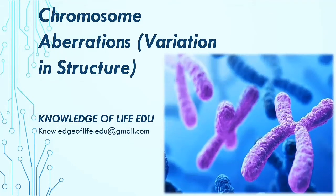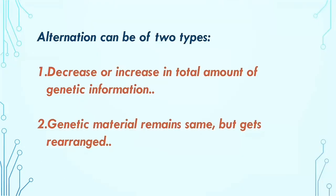Hello everyone, welcome to another video of Knowledge of Life. Today in this video we will mainly discuss about the variations in chromosome structure and functions, which is also known as chromosome mutation. The genetic or chromosomal variation can be of two types: one involves a decrease or increase in the total number of genetic information.